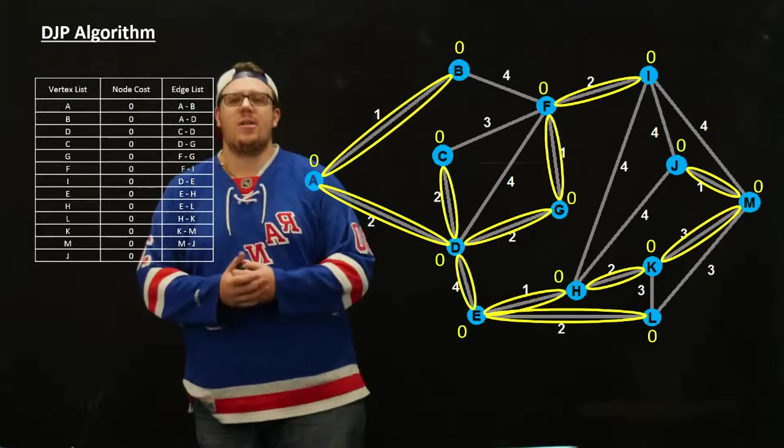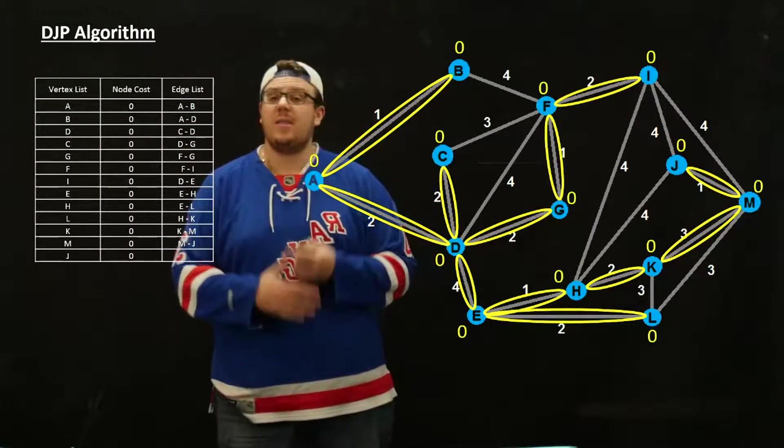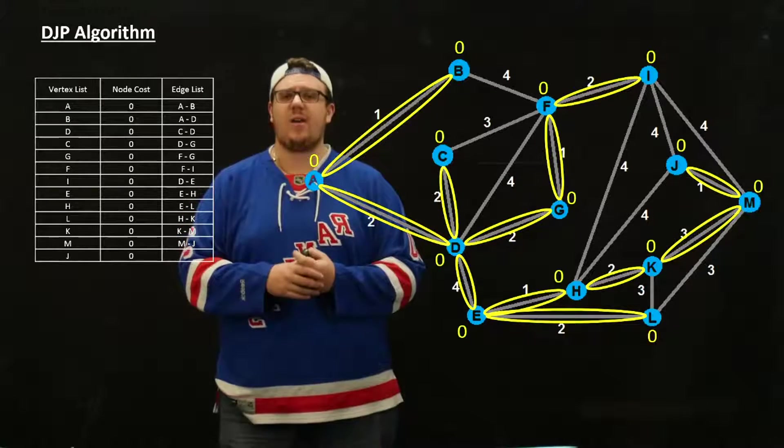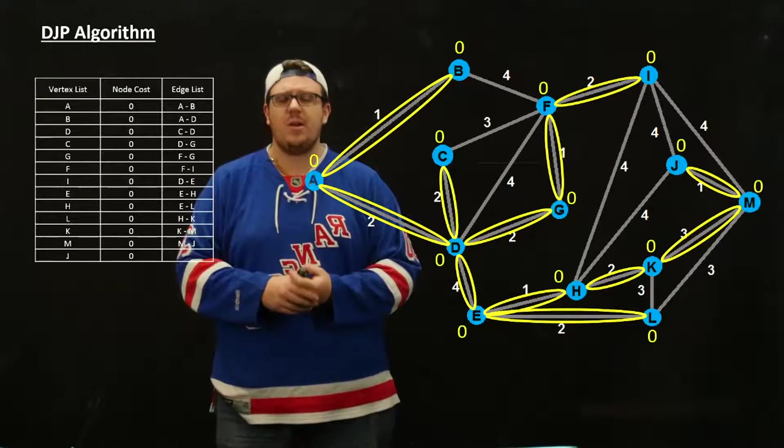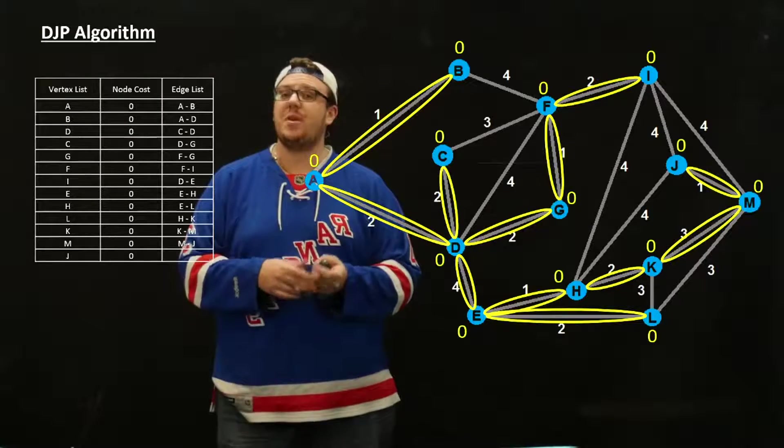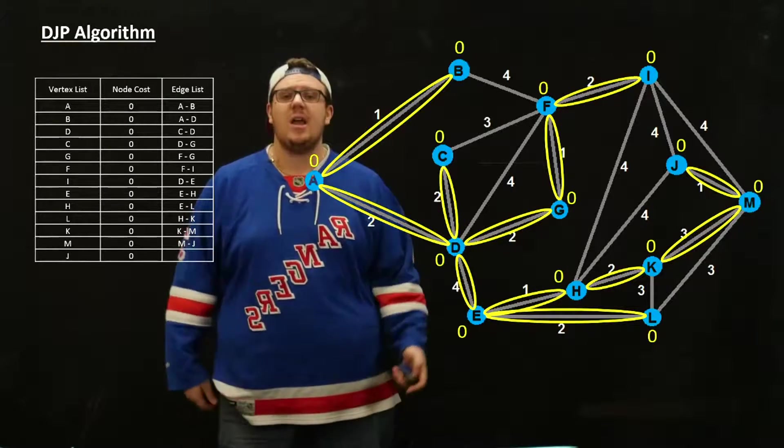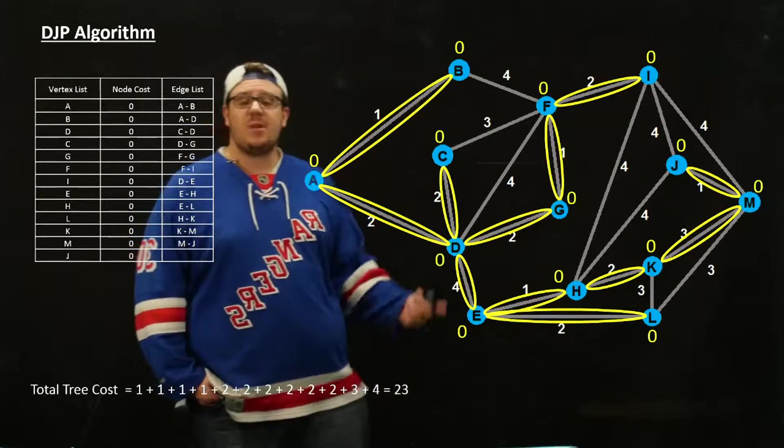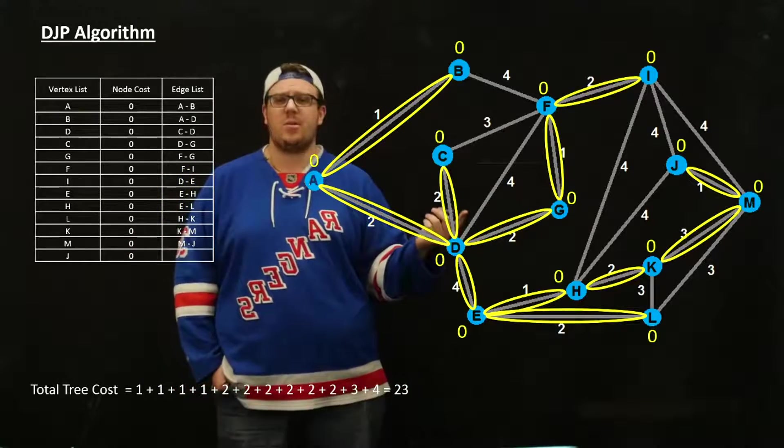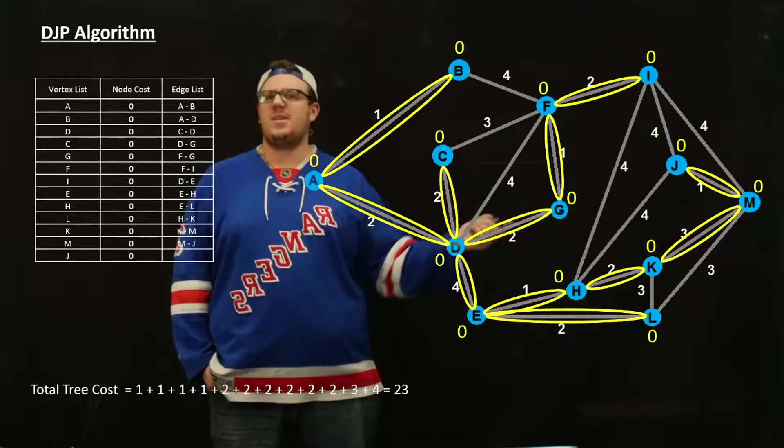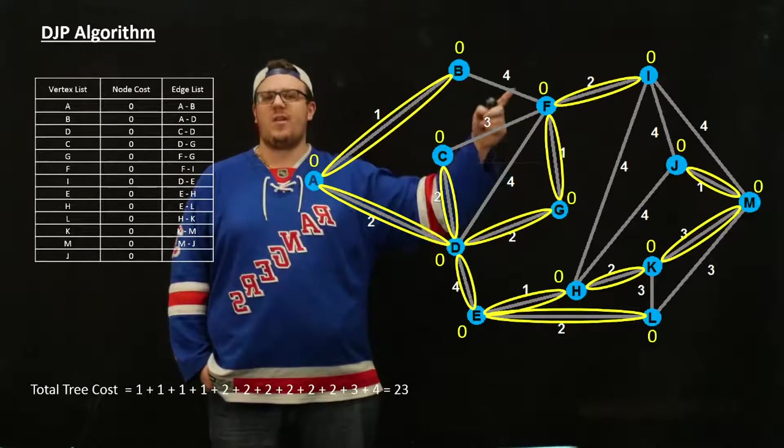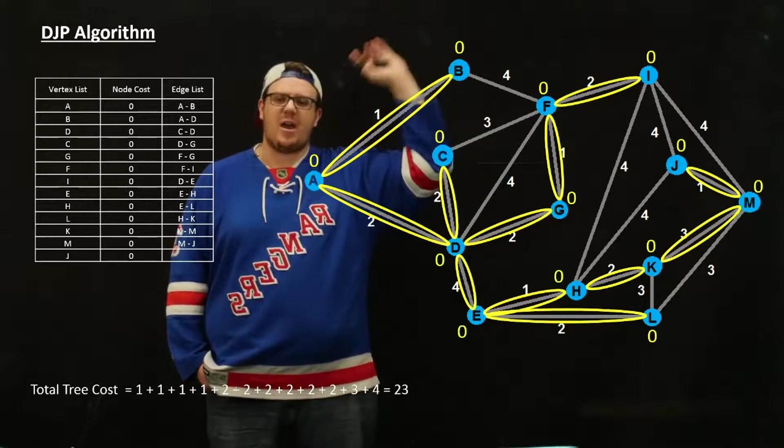This should be the minimum spanning tree. We found last week when we did Kruskal's algorithm that the minimum spanning tree cost should be 23 if we did it correctly. And indeed, if you add up all of these, we actually ended up with the same exact tree as we did last week doing both algorithms. But that could have been different. We could have had this one instead of that one. It didn't matter. But we could have ended up with a different tree.